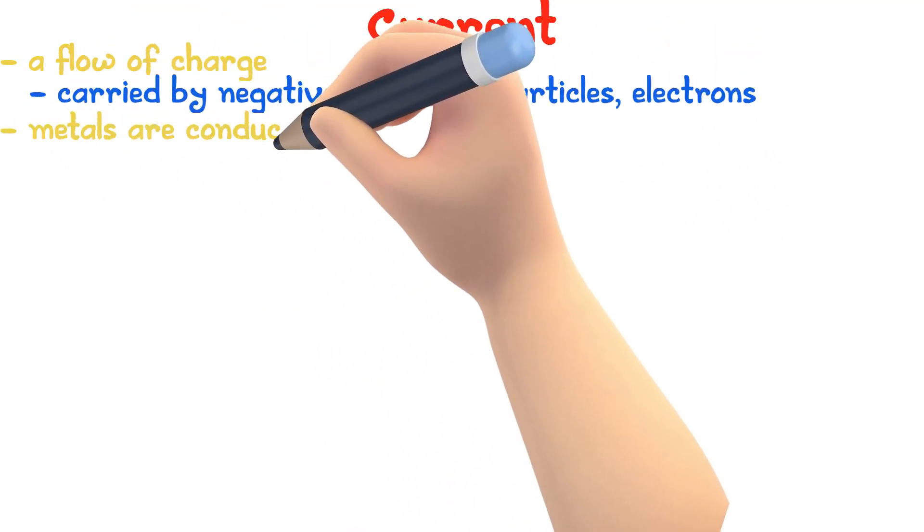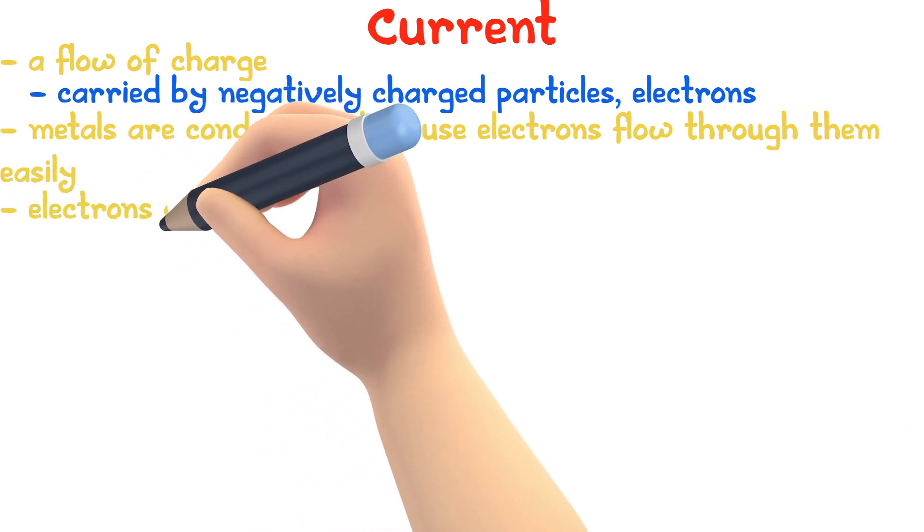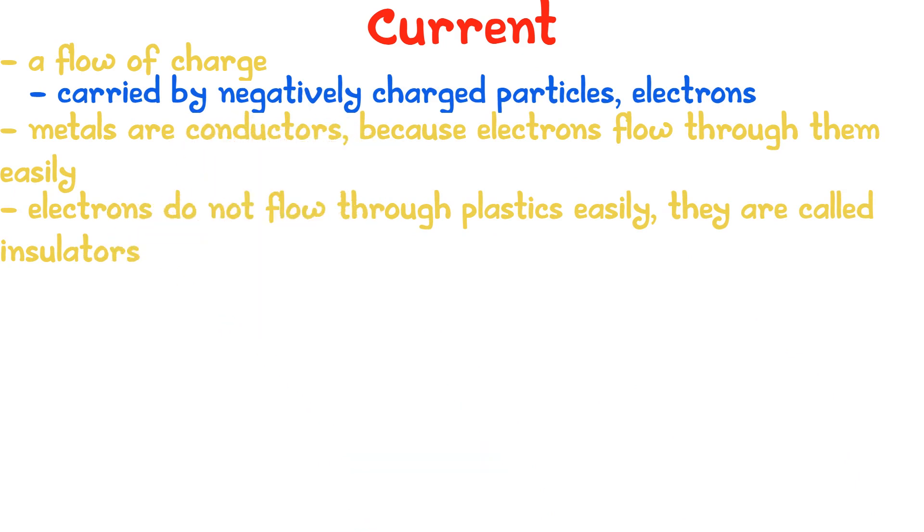Electrons can flow through metals easily, which is why metals are called conductors of electricity. Plastics are poor conductors of electricity because electrons do not pass through them easily. Poor conductors of electricity are called insulators.